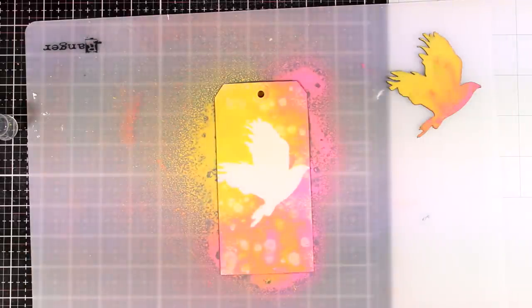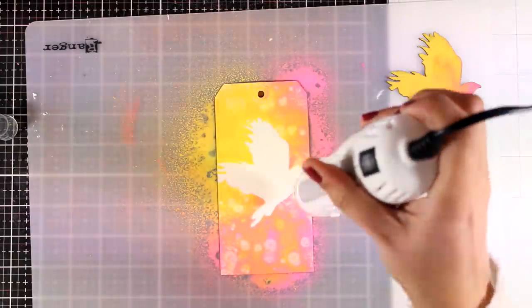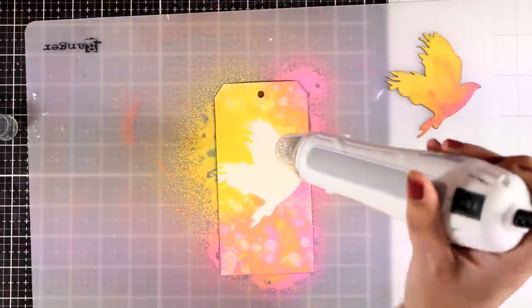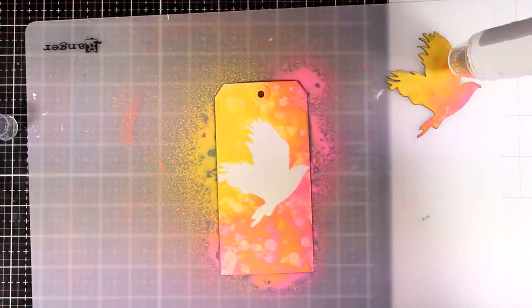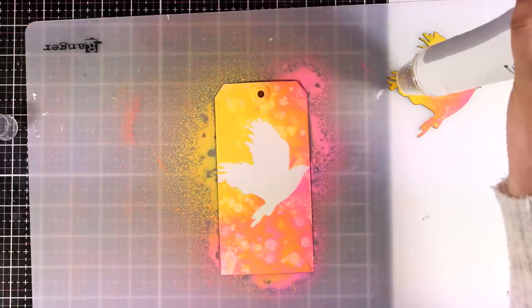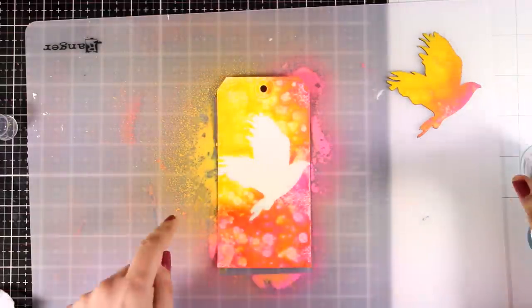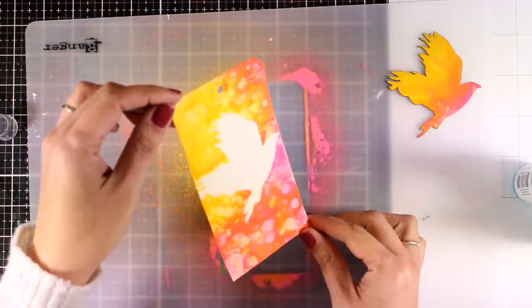I'm making sure that I cover up both the bird as well as the tag underneath. You can see the beautiful cells that it creates. I absolutely love this look. I'm going to remove the bird and put it aside to dry. Now, here are my pieces that are completely dry. Notice how vibrant the colors look now.